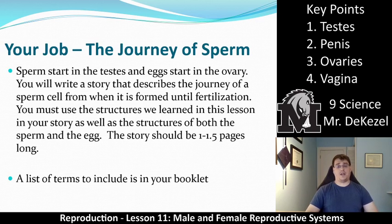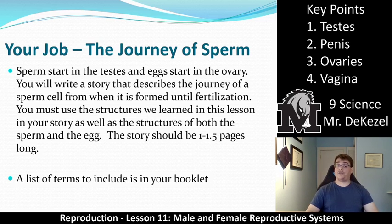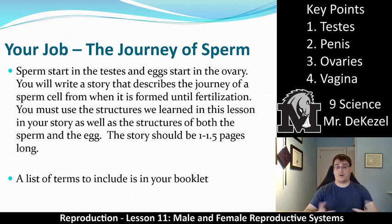The story should be about a page to a page and a half. There's space given to you in your booklet for you to write the story by hand. You can also type it if you want, and a list of all the terms that you need to include is in your booklet on the assignment page. I hope this was helpful and that we were able to keep this academic and professional as we learn the different structures of the male and female reproductive systems. If you have any questions, please let me know. Thanks very much for watching, everyone.